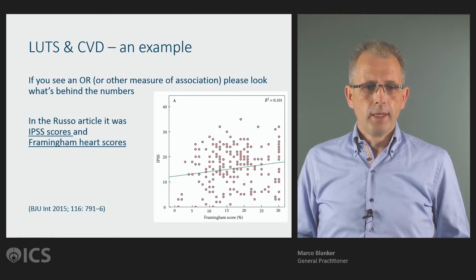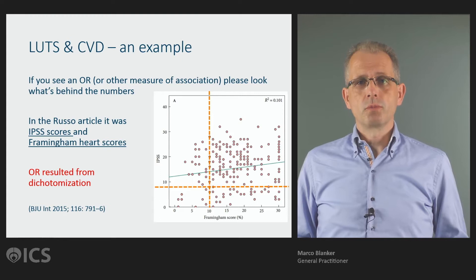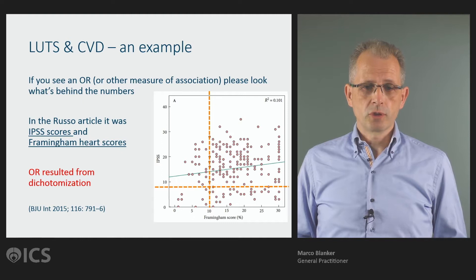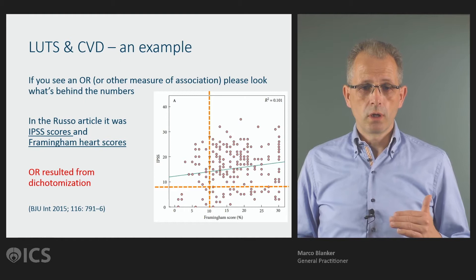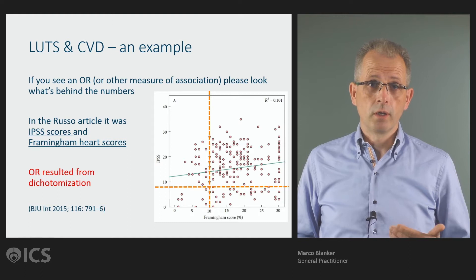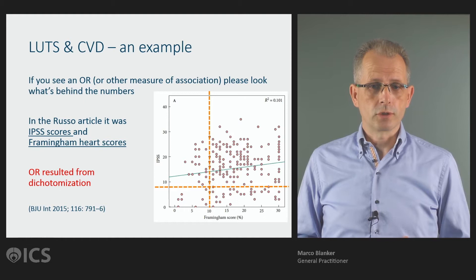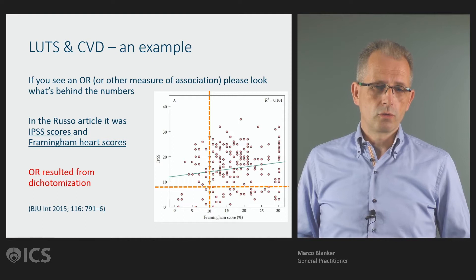But still we have the odds ratio of 5.9 that suggested a strong association. So how is this possible? It is possible because the odds ratio resulted from dichotomization. The authors categorized both the IPSS score and Framingham Heart score into two categories. For the IPSS they chose a cutoff of 8 points — the standard cutoff to define moderate to severe lower urinary tract symptoms — and a Framingham Heart score of 10%, also widely used to denote increased risk. Based on these categories you can translate this figure to a 2x2 table and then obtain an odds ratio.